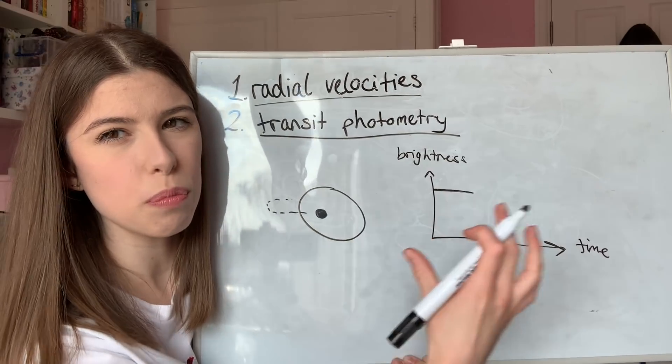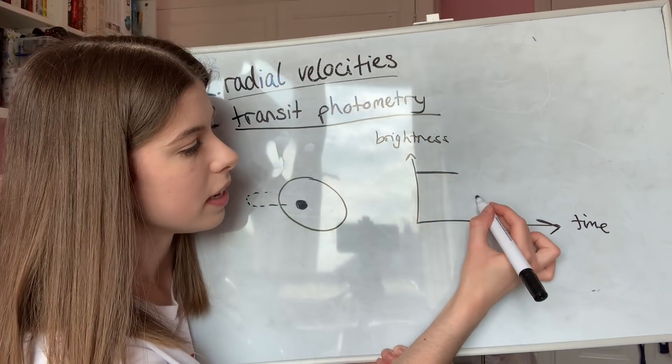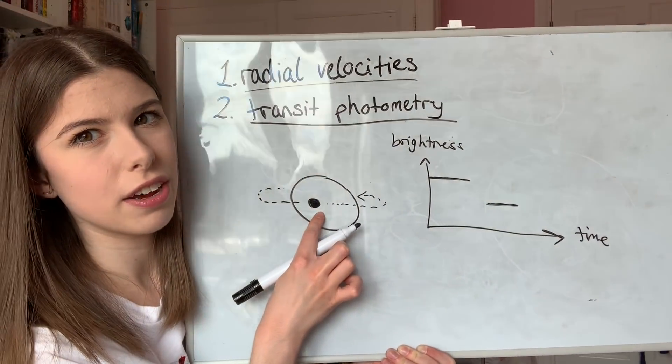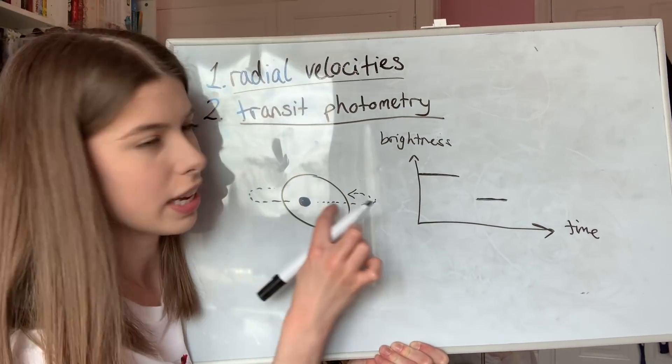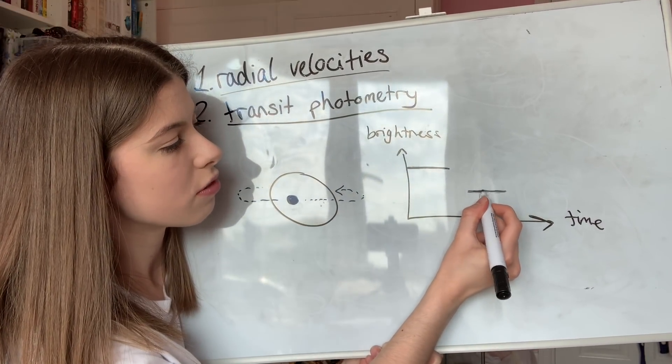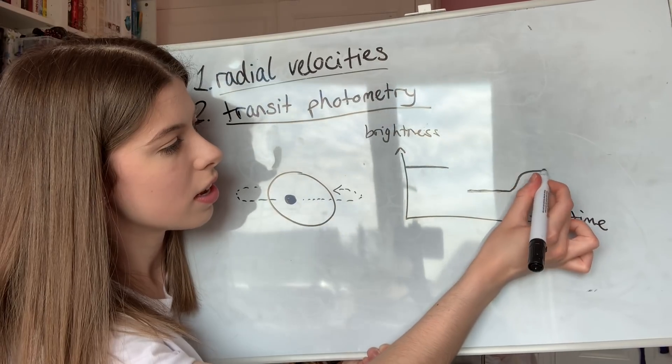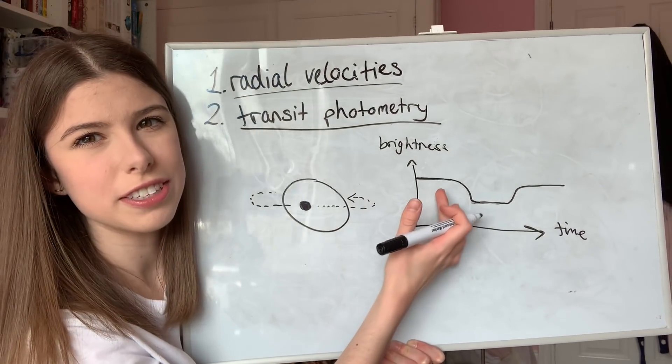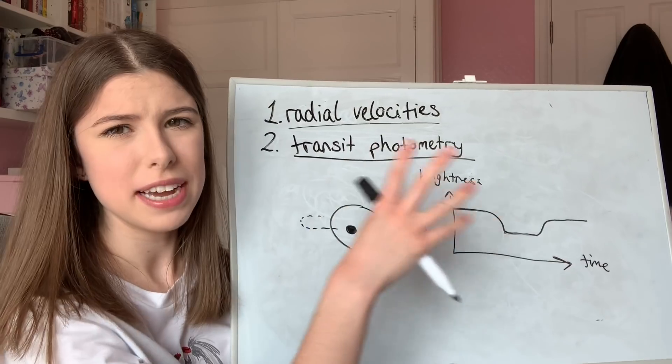So the overall brightness of the star is going to be decreased down to a lower level. The exoplanet is going to take a finite amount of time crossing in front of the star. There is going to be that amount of time where the brightness from the star remains at this level until it returns to its previous intensity. The light curve of the star is going to look something like this.